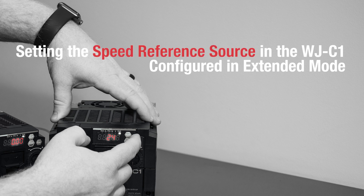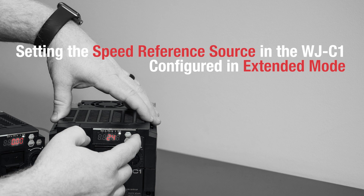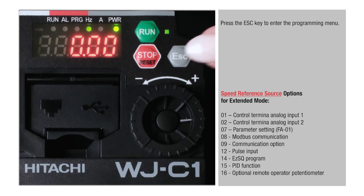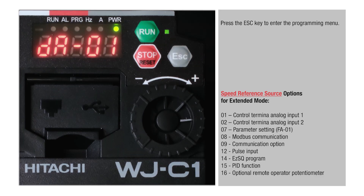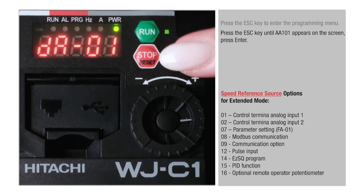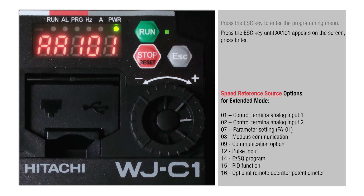Setting the Speed Reference Source in the WJC-1 configured in Extended Mode. Press the Esc key to enter the programming menu. Press the Esc key until AA101 appears on the screen, then press Enter.